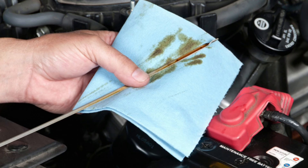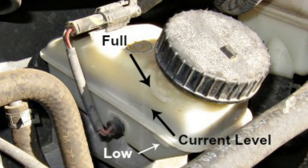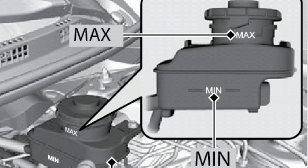Step 5: Check fluid levels. Ensure that the brake fluid level is within the recommended range, as low brake fluid affects the ABS module, a closely related component to the AdvanceTrac System.